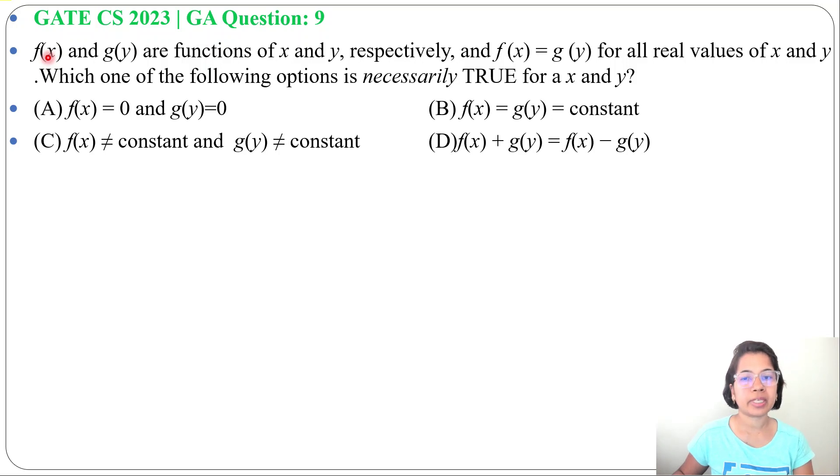Let's solve one previous question of general aptitude. This question was asked in GATE CS 2023 GA question number 9. f(x) and g(y) are functions of x and y respectively and f(x) equals g(y) for all real values of x and y.